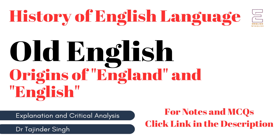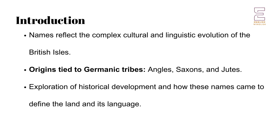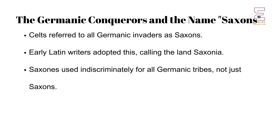Hello everyone, welcome to this series on the history of the English language. In this video, we are going to discuss the origins of the names England and English. The names England and English carry a long history that reflects the complex cultural and linguistic evolution of the British Isles. The origins of these names are closely tied to the Germanic tribes that migrated to England during the early medieval period, particularly the Angles, Saxons and Jutes.